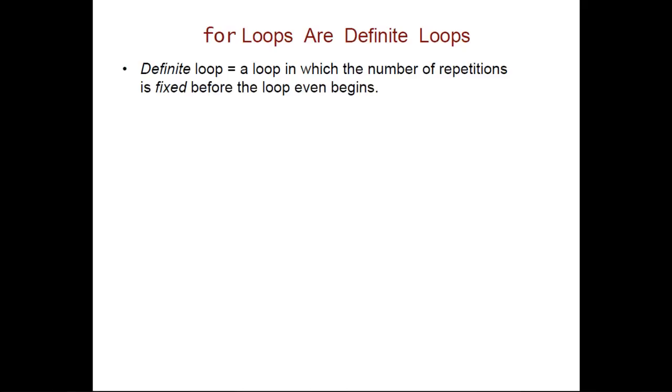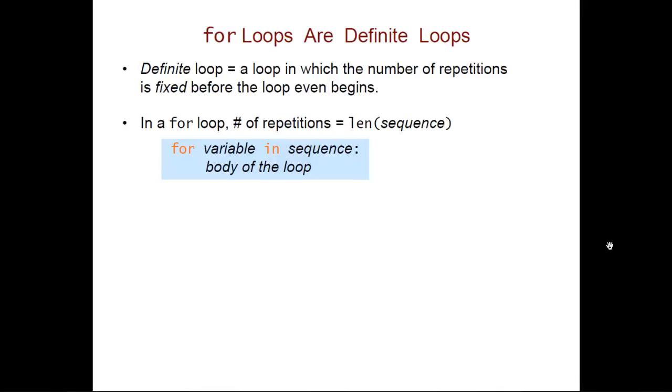Now for loops are known as definite loops. A definite loop is a loop in which we know ahead of time, before the loop even begins, how many repetitions we're going to get. So it's a fixed number of repetitions. As we said earlier, in the case of a for loop, the number of repetitions is going to be the length of whatever sequence you specify in the loop header.